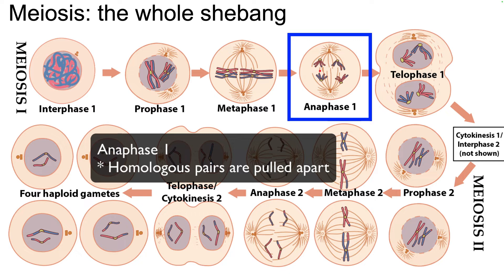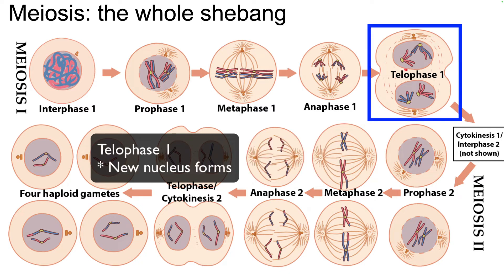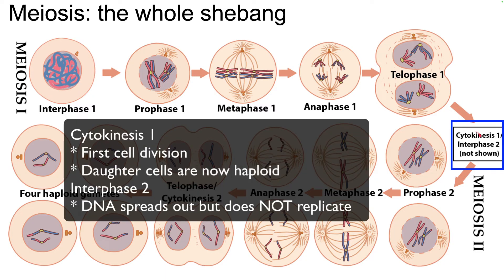During anaphase one, the homologous pairs are pulled apart. During telophase one, a new nucleus forms. There's a cytokinesis one and an interphase two that's not shown in this diagram.